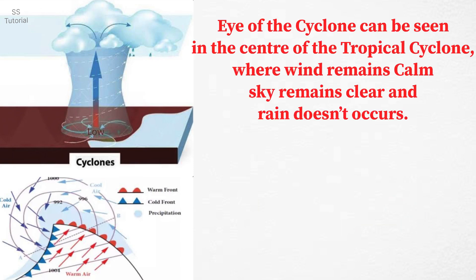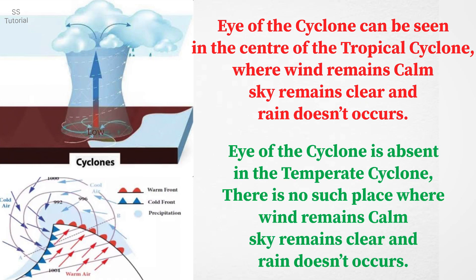The eye of a cyclone can be seen in the center of the tropical cyclone, where wind remains calm, sky remains clear, and rain does not occur. But there is no such place in the temperate cyclone where rain and wind is absent.